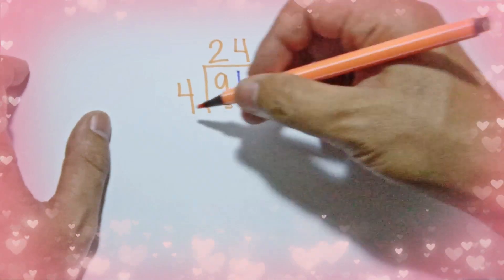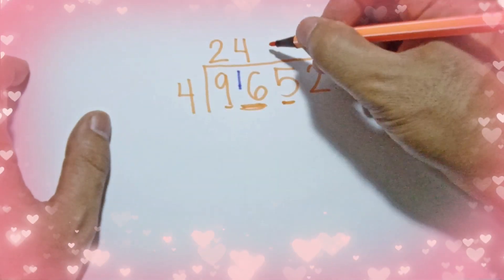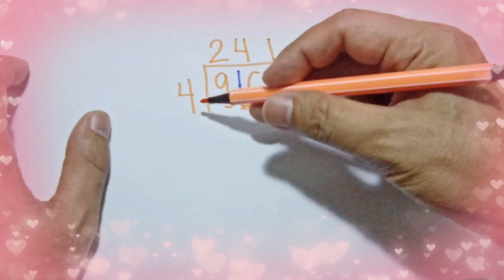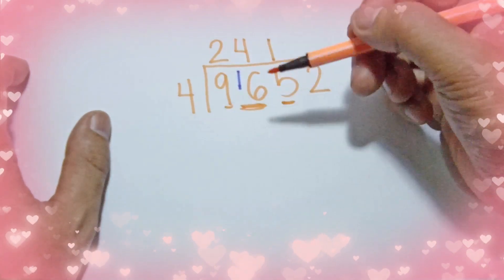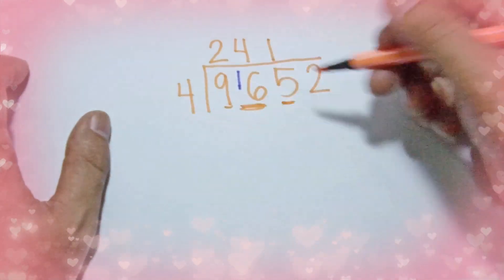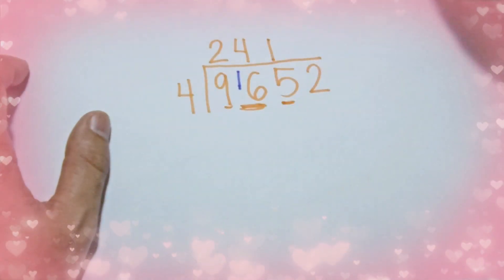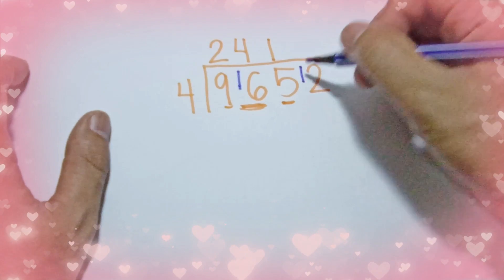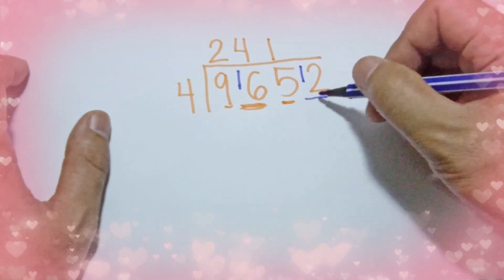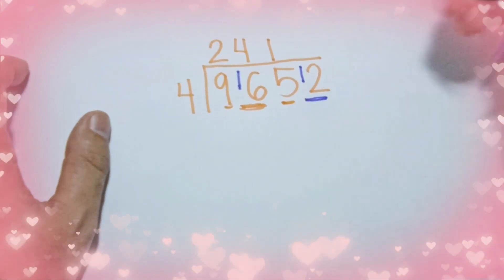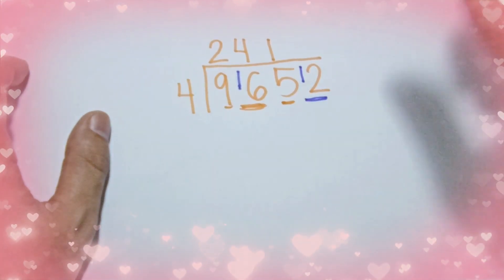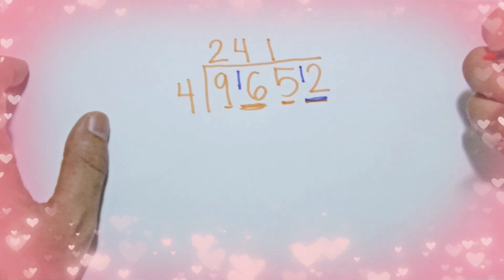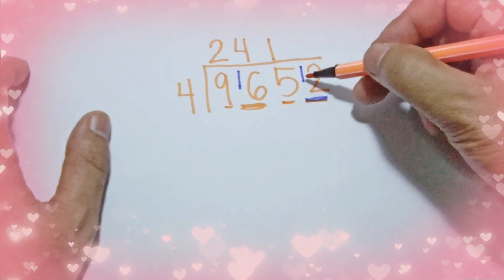5 divided by 4 is 1. 1 times 4 is 4, and 5 minus 4 is 1. We put 1 here so that 2 will become 12.